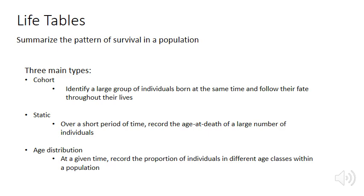One of the problems with age distribution life tables is that they assume those age classes are not shifting through time. They also assume there's no growth or reduction in the population over time.